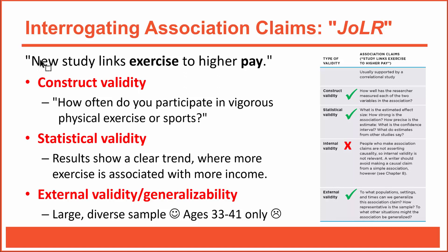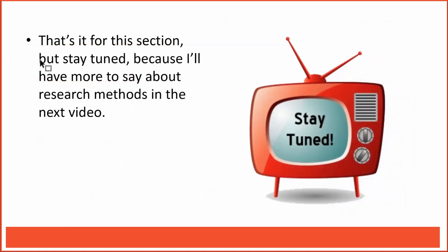Let's assess the overall validity of this claim. The construct validity, the statistical validity, and the external validity are all acceptable. Unlike the Forbes article, which didn't provide much detail, the original article published in the Journal of Labor Research provided sufficient information to verify that the claim is appropriate. In fact, the claim might begin to tell us something really interesting about the relationship between exercise and income. That's it for this section — stay tuned for more on research methods in the next video.